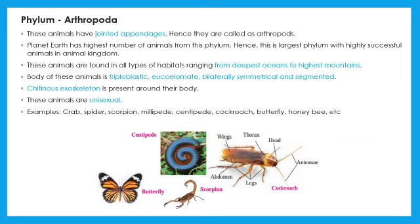Some insects like honey bee, lac insect, and silkworm are useful to us. Butterflies are helpful for pollination. But some insects like mosquitoes, bed bugs, and lice spread diseases. The standing crop in the fields can be totally ruined by insects. The group of short-horned grasshoppers known as locusts can damage crops when they attack in thousands at a time.